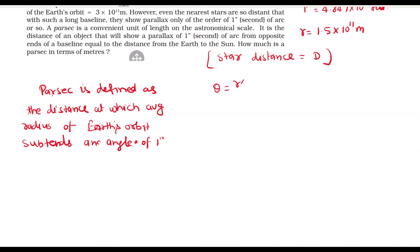तो θ is equal to r/d. तो यहाँ पर हमें d की value निकालनी है, तो यह हमारे पास हो जाएगी r/θ. दोनों की value रखते हैं: 1.5 × 10^11 divided by 4.847 × 10^-6, जिसको आगे solve करेंगे तो यह हमारे पास आएगा 3.09 × 10^16 meter.